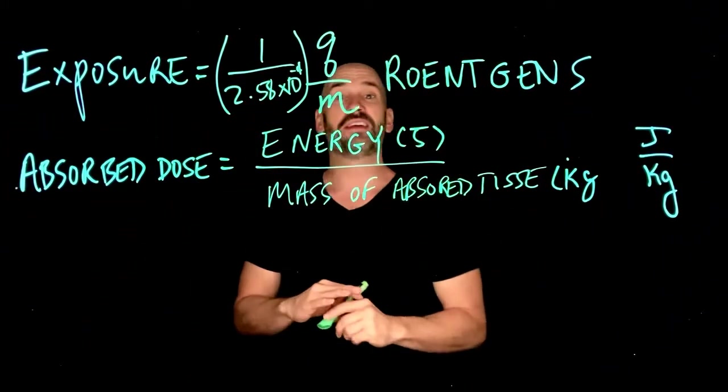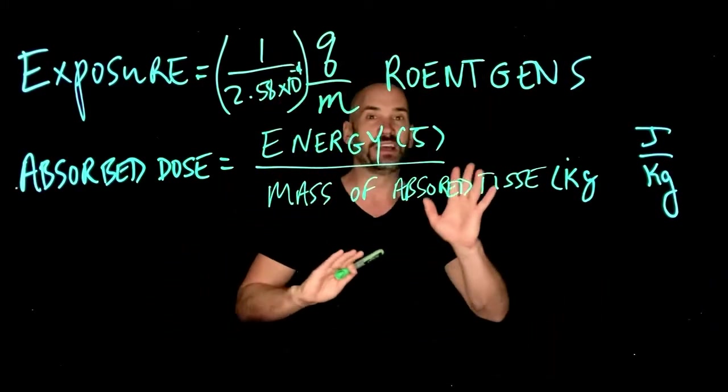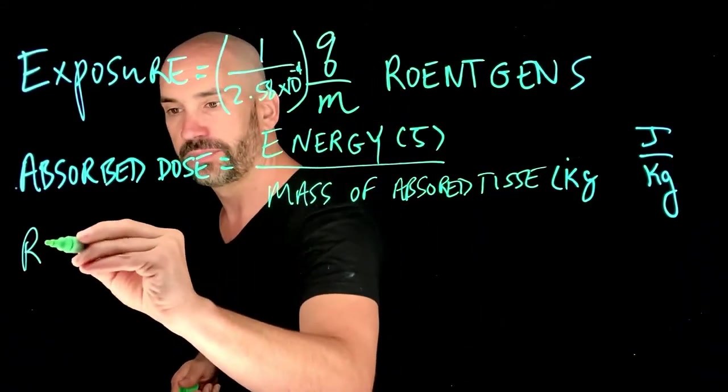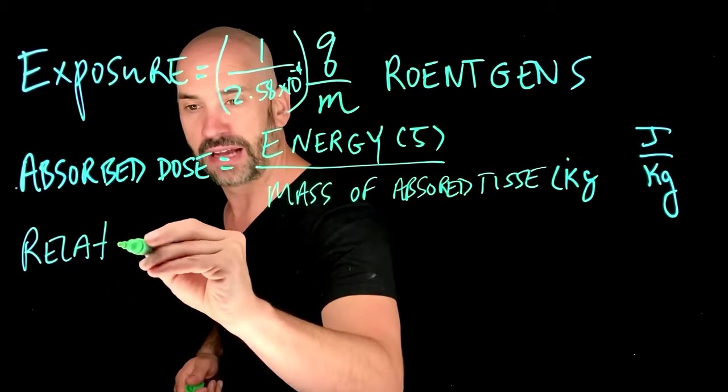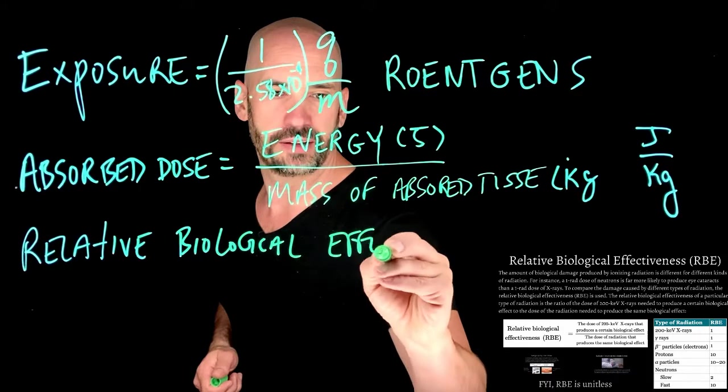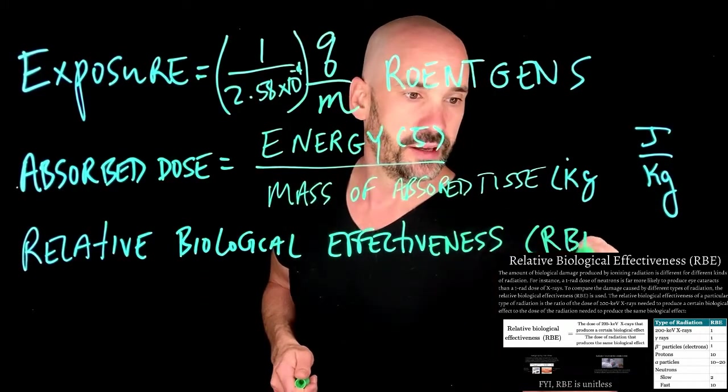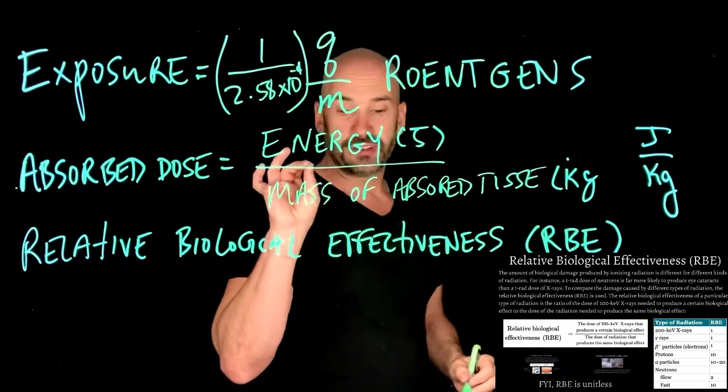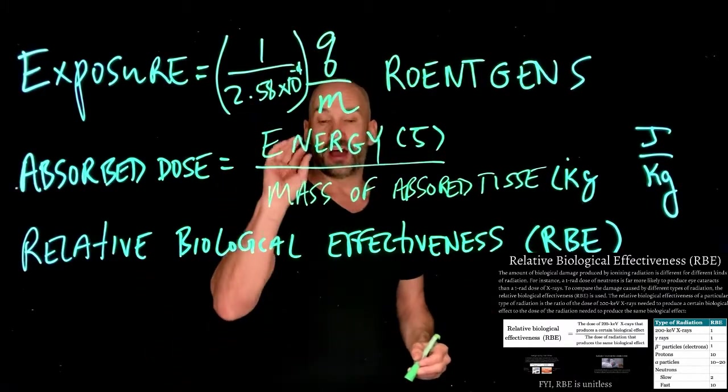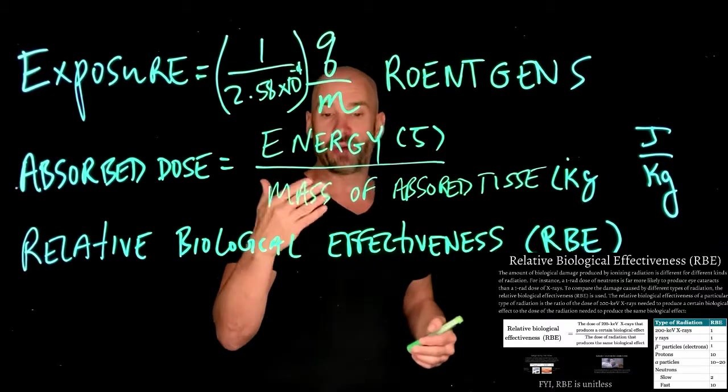But there's another weird quirk about radiation, and that's that not all radiation is created equal. So to normalize and create a relative measurement of different kinds of radiation, there's something called the relative biological effectiveness, or RBE. The amount of biological damage produced by ionizing radiation is different for different kinds of radiation. For example, a one rad dose of neutrons is far more likely to produce eye cataracts than a one rad dose of x-rays.